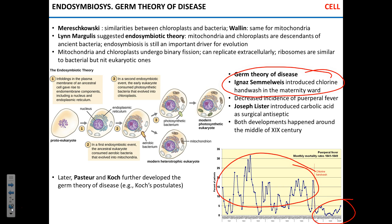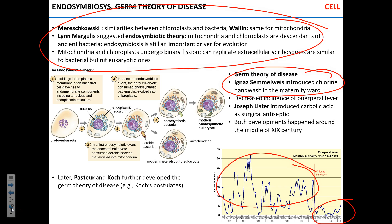Now let's go ahead with endosymbiosis — the theory of how eukaryotic cells acquired some of their critical organelles. First eukaryotes appeared something like two billion years ago.